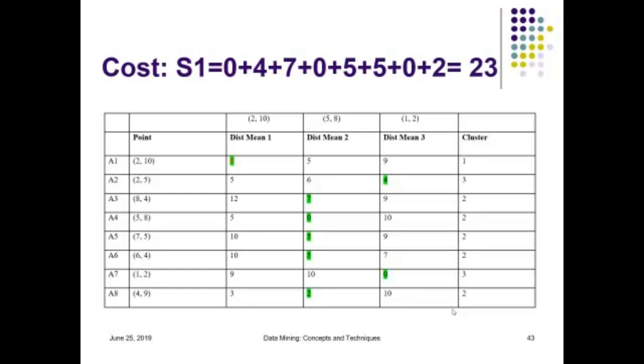For the first element A1 the shortest distance is 0, plus for the second element it is 4 plus 7 and so on. The cost for the initial medoids is 23.